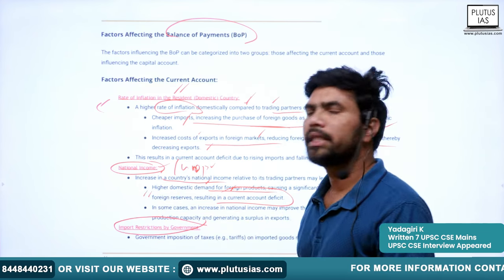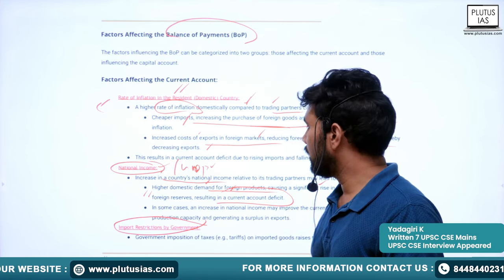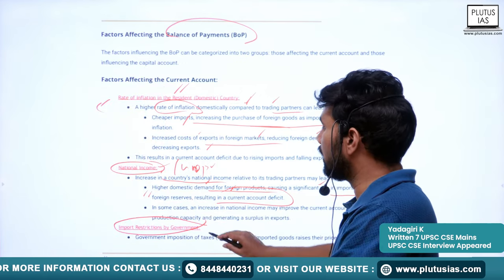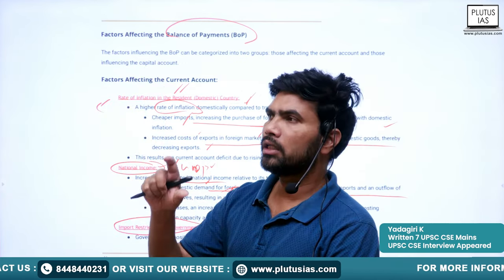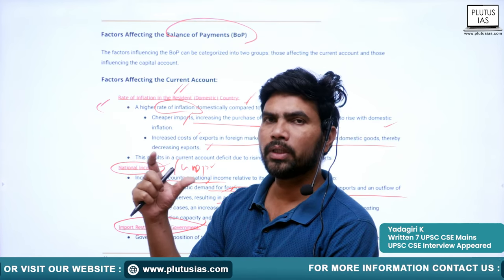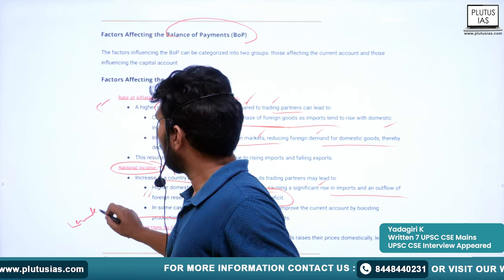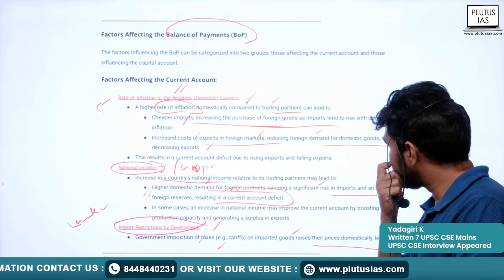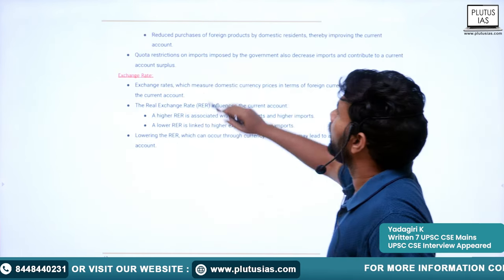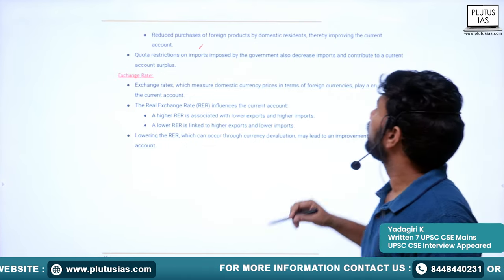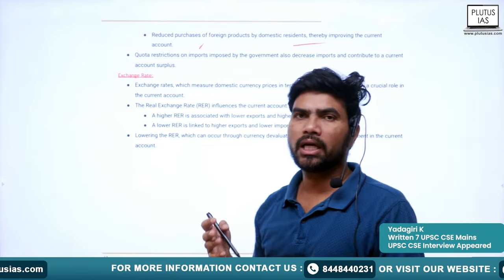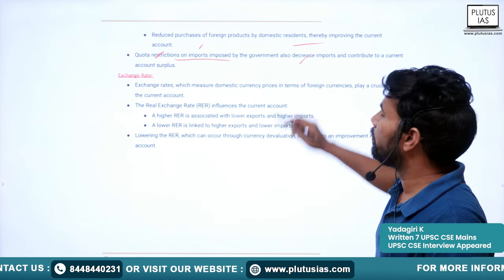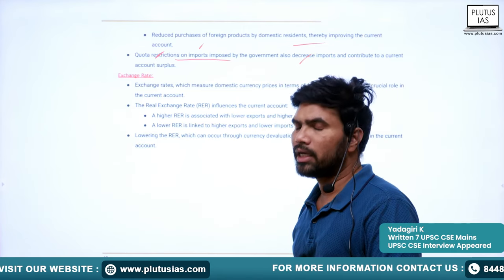Another important factor is import restrictions by governments. To arrest the outflow of foreign exchange, some countries will impose restrictions on imports — limits on how much can be imported. Government imposition of taxes or tariffs on imported goods raises their prices domestically, leading to reduced purchases of foreign goods by domestic residents, thereby improving the current account deficit. Quota restrictions on imports imposed by governments also improve the current account of a country.